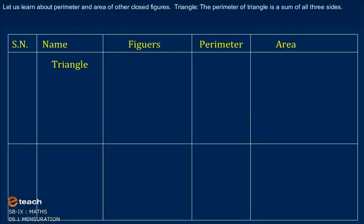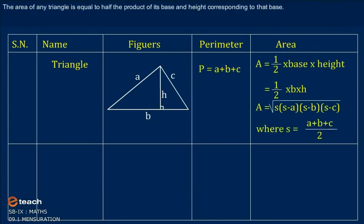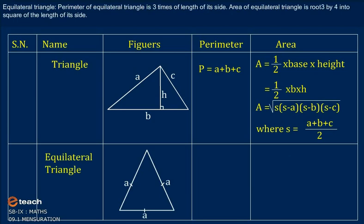Now students, let us learn about the perimeter and area of other closed figures. Triangle: the perimeter of a triangle is the sum of its three sides. The area of any triangle is equal to half the product of its base and height corresponding to that base. We can calculate area if half perimeter S is given, where A, B, and C are the lengths of sides of the triangle.